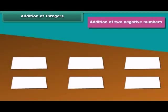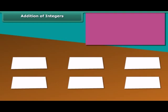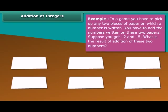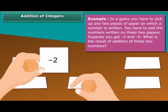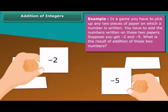Addition of two negative numbers. Example: In a game, you have to pick up any two pieces of paper on which a number is written. You have to add the numbers written on these two papers. Suppose you get minus 2 and minus 5. What is the result of addition of these two numbers?